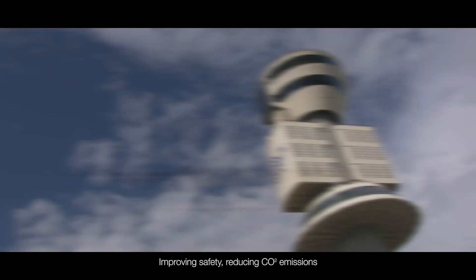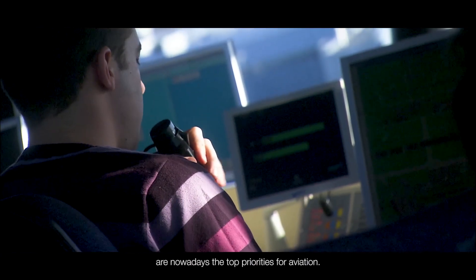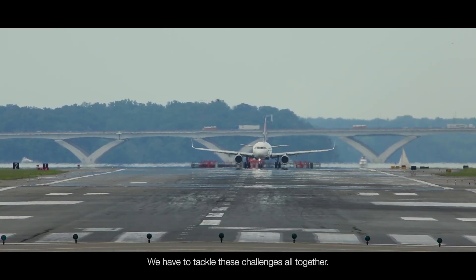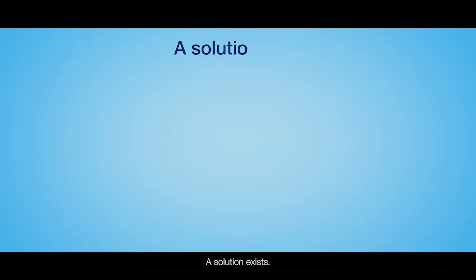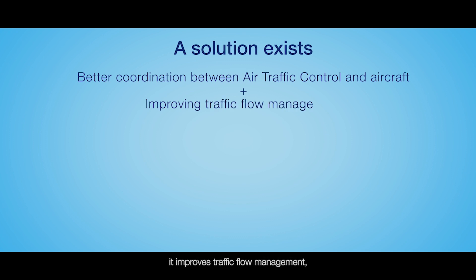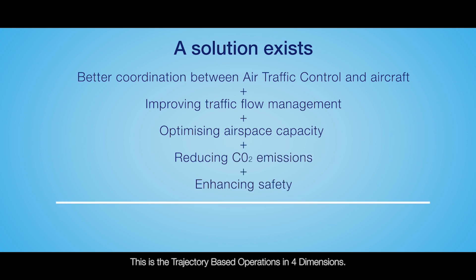Improving safety, reducing CO2 emissions while maintaining airspace capacity are nowadays the top priorities for aviation. We have to tackle these challenges all together. A solution exists based on a better coordination between air traffic control and aircraft — it improves traffic flow management, optimizes airspace capacity and reduces CO2 emissions while enhancing safety. This is trajectory-based operations in four dimensions.